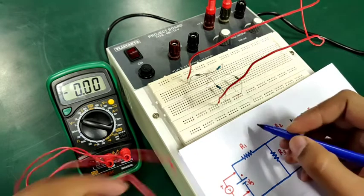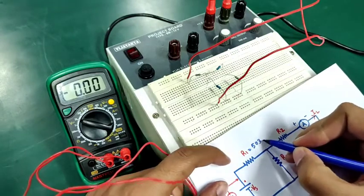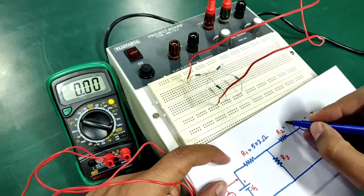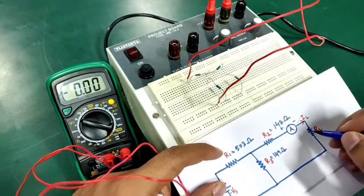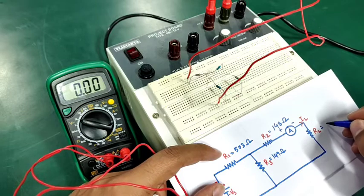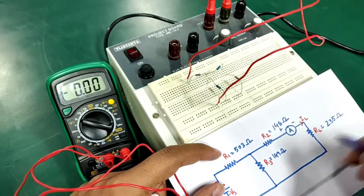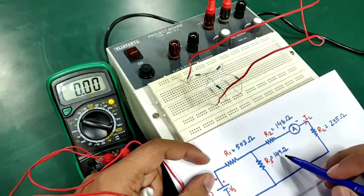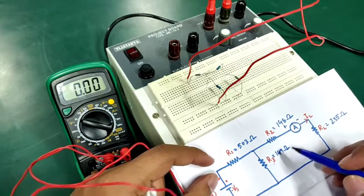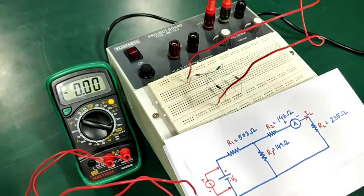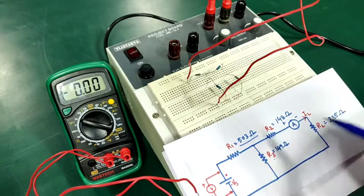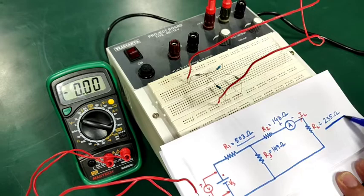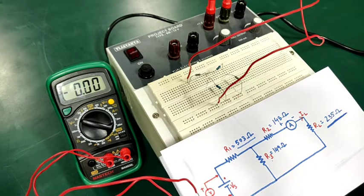R1 comes out to be 503 ohms, R2 comes out to be 148 ohms, R3 comes out to be 149 ohms, and RL comes out to be 235 ohms. Although the color coding of R2 and R3 are the same, when I measured with the multimeter there was a slight difference, which is acceptable due to tolerance limits. I have taken the values given by the multimeter rather than calculating via color coding.